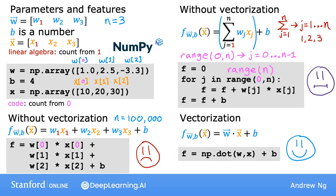I want to emphasize that vectorization actually has two distinct benefits. First, it makes the code shorter - it's now just one line of code, isn't that cool? And second, it also results in your code running much faster than either of the two previous implementations that did not use vectorization.